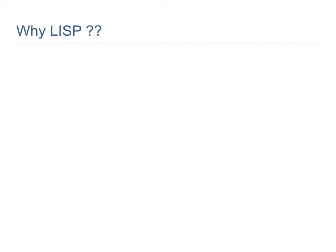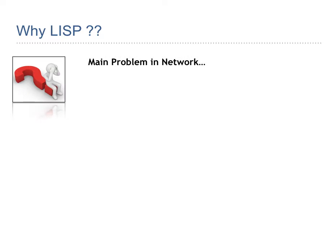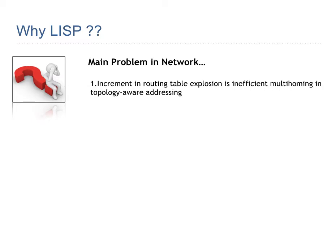So let's kick on. Why actually is LISP required? In today's world the main problem in networking was the incrementation in routing tables — there was a heavy explosion of multi-homing topology-aware addressing. Topology-based or node addressing only represents the relative location in the topology, and there were a few drawbacks. The first one is it requires a very strict and stringent approach because of the nature of topology-based addressing, which was perfect in a static environment.